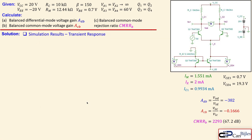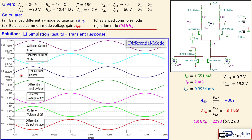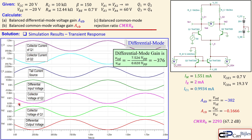The transient simulation for differential mode uses a 10 mV peak, 1 kHz sine wave as the differential input VID. The output VOD is inverted (negative sign) and the measured gain VOD/VID ≈ −376, close to the calculated −382. Collector currents IC1 and IC2 fluctuate around their DC values, and V01 and V02 behave as expected.